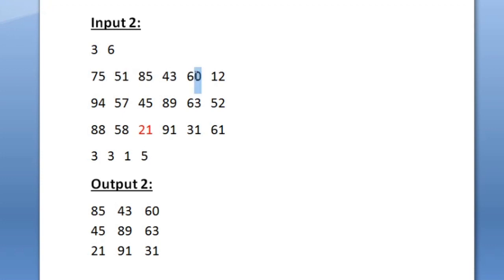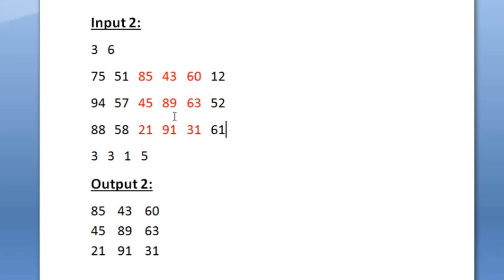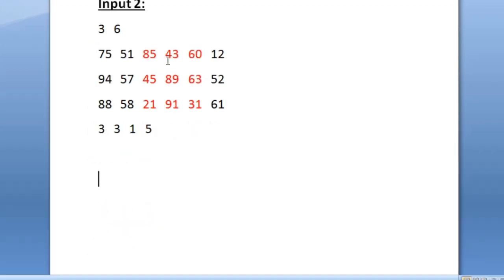So this element is 60, and as per the question these two integers are opposite corners of a sub-matrix. So in this sub-matrix, the integers 21 and 60 would be the opposite corners. We would be printing this sub-matrix as our output, so we are printing 85, 43, 60.